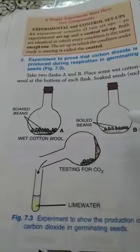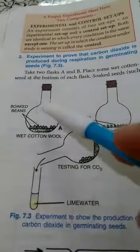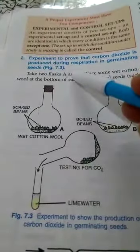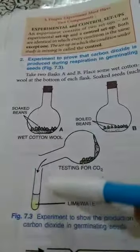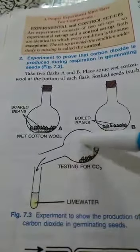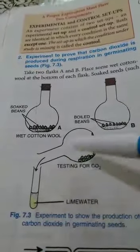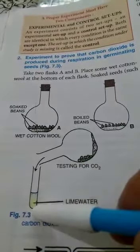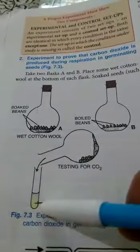Now keep it as such for few days and after that you have to remove this cork and take one test tube with lime water. Now invert this conical flask over the mouth of test tube. You will see that the lime water will turn milky.